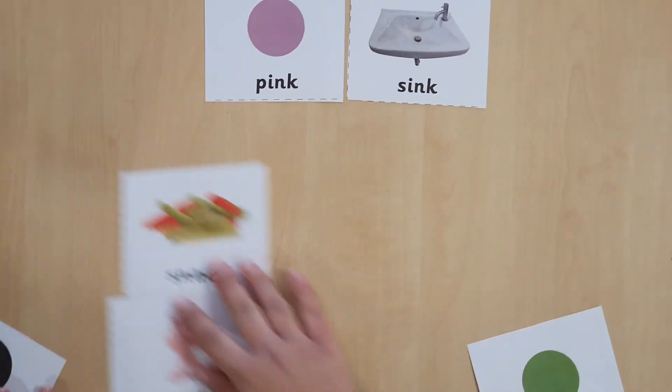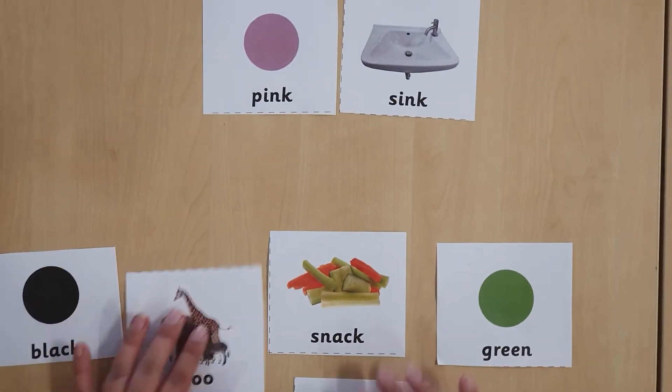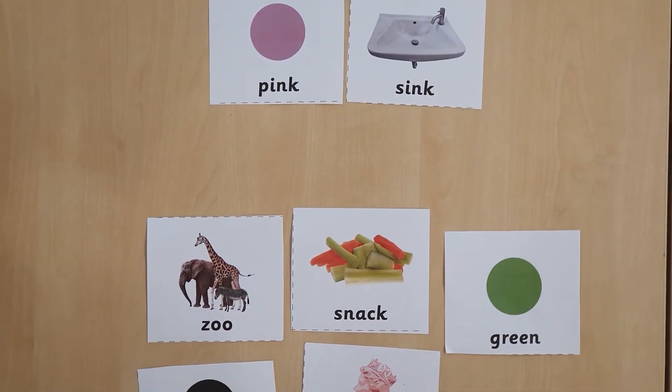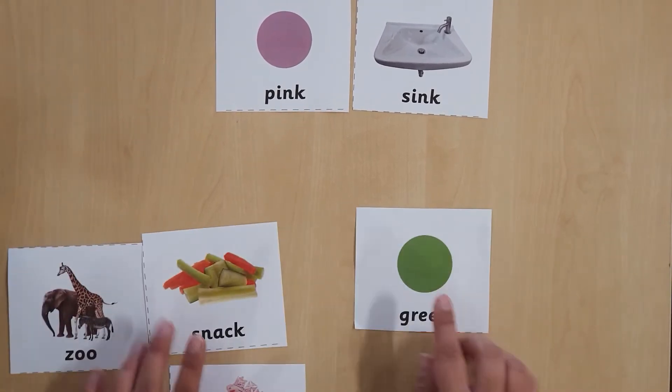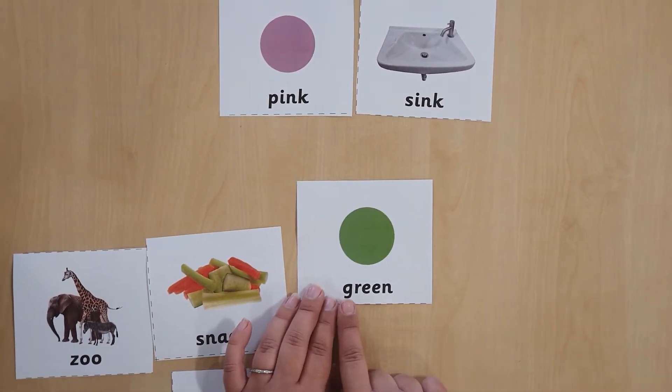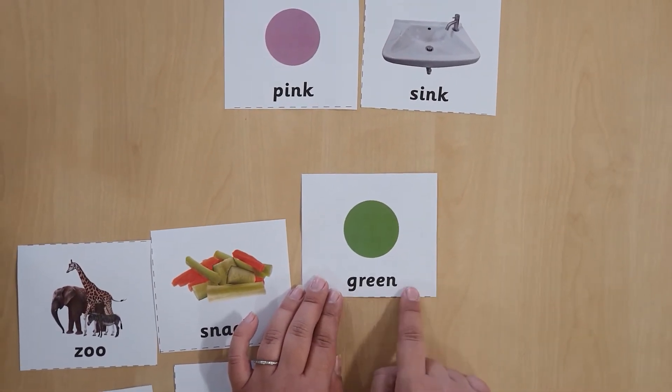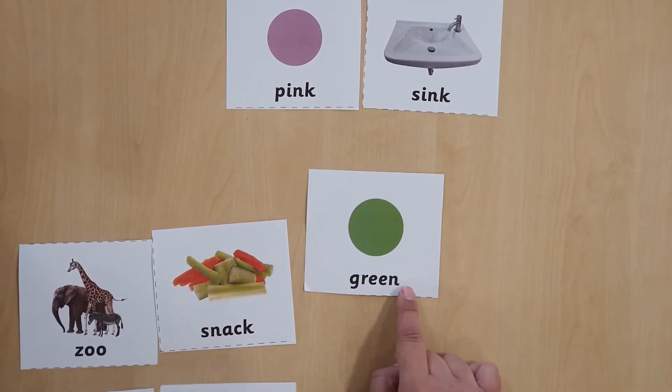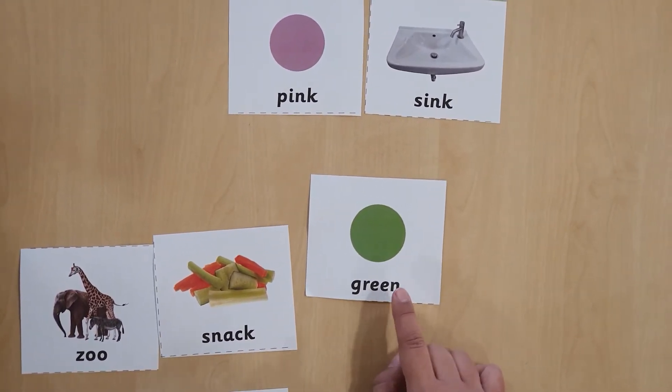Let's look at our next one. What words do we have left? Okay, let's try this one. What is this word? Let's sound it out. Green. Let's see if we can find the pair that sounds the same.